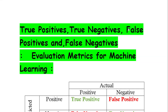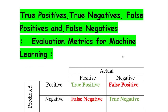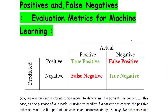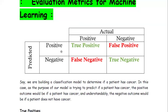True positives, true negatives, false positives, and false negatives are very important concepts to understand when you are dealing with machine learning models — basically classification models. This is one kind of evaluation metric we use in machine learning. We are going to understand what are true positive, true negative, false positive, and false negative, as seen in a table of actual and predicted values.